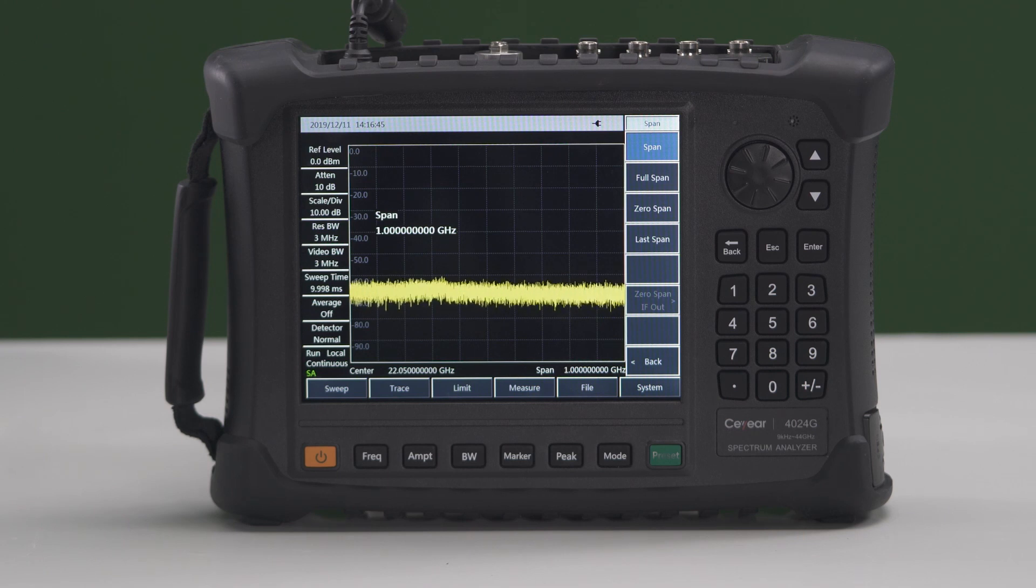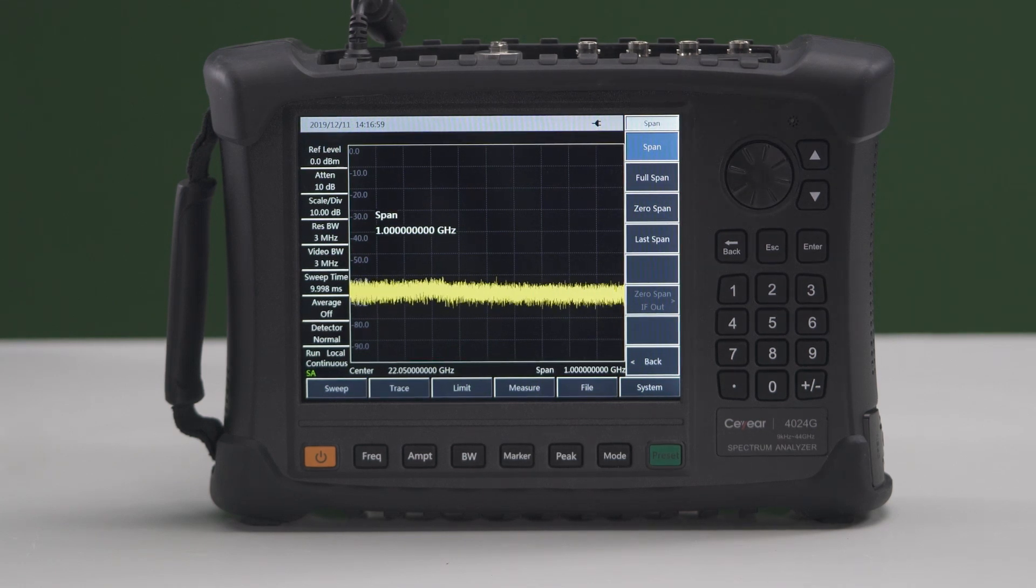The unique fast scanning technology of C-Year 4024 Spectrum Analyzer eliminates the requirement on phase relock in the entire scanning process. The sweep time at 1 GHz frequency span can be less than 20 ms, which significantly accelerates testing speed.